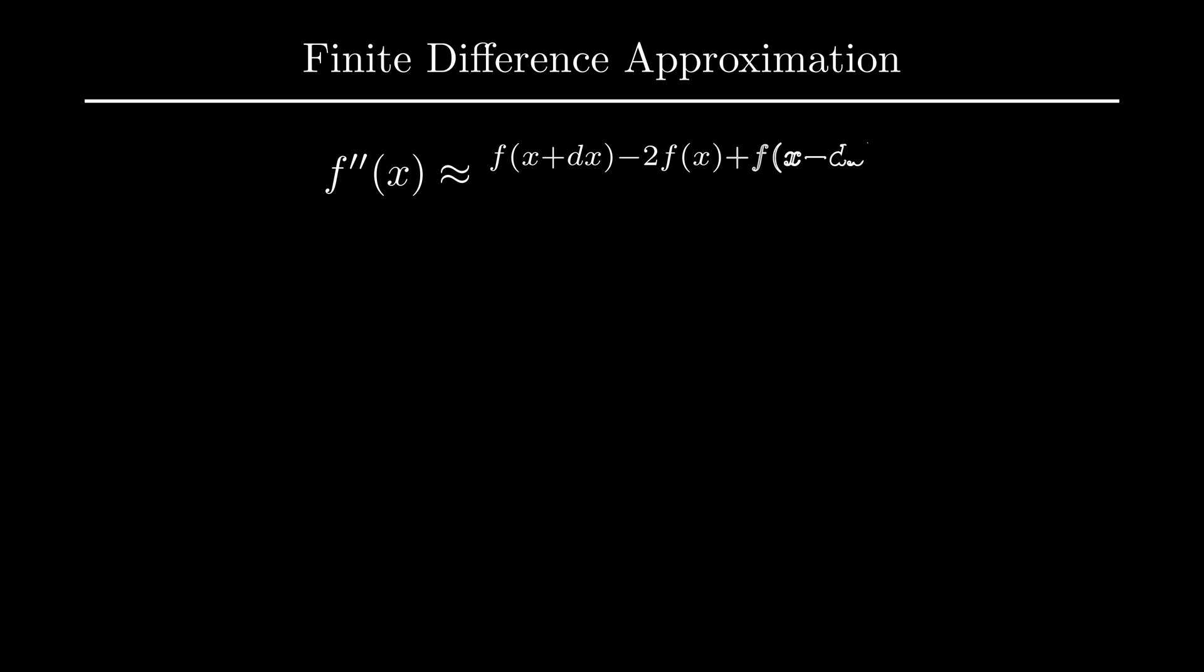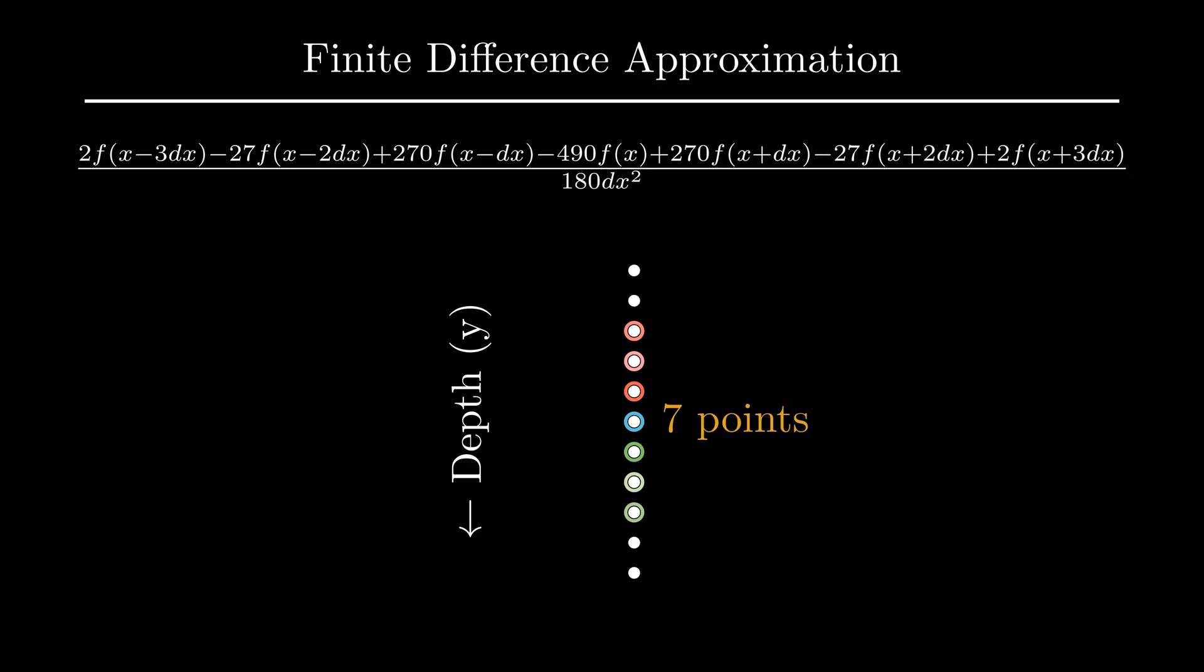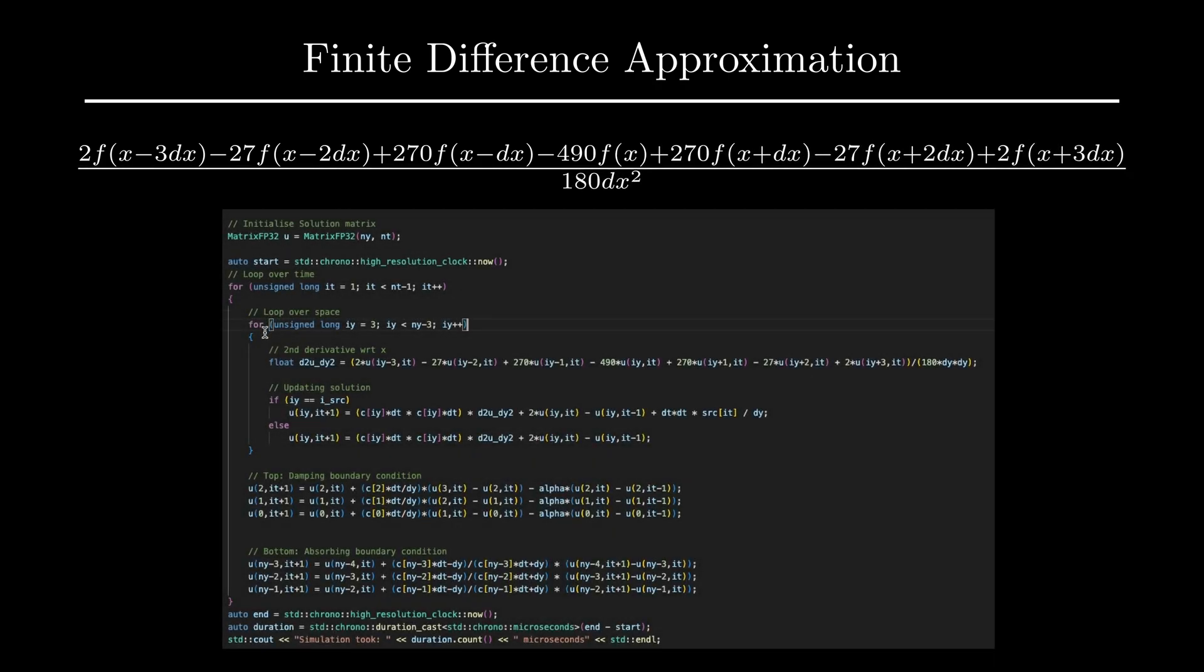Looking back at the Taylor series, I used three points to approximate the second-order derivative. To get higher accuracy, I had to use more points, say 5 or 7. The drawback was that the formulation became significantly more complex. I decided to use the approximation defined using 7 points, but only for the spatial derivative, and the reason was that I did not want to complicate the codebase too much.